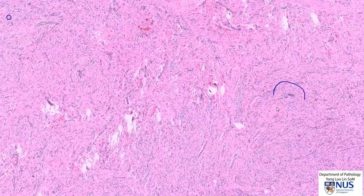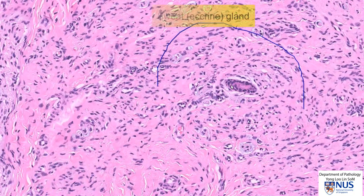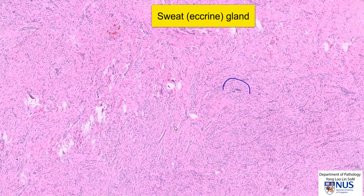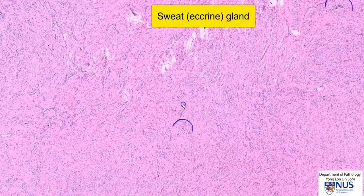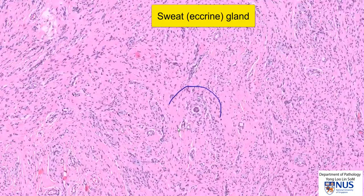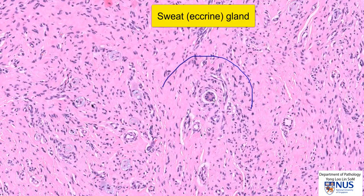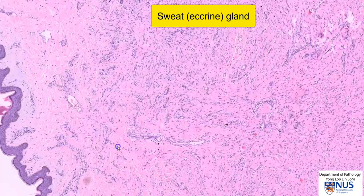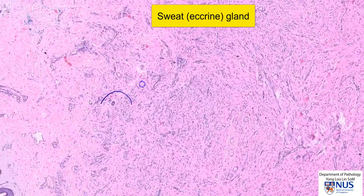In neurofibromas, we may sometimes see entrapped normal adnexal structures. For example, here this is part of an eccrine sweat gland. And if we move around, we can see a couple of others — there's one here and also another one here.